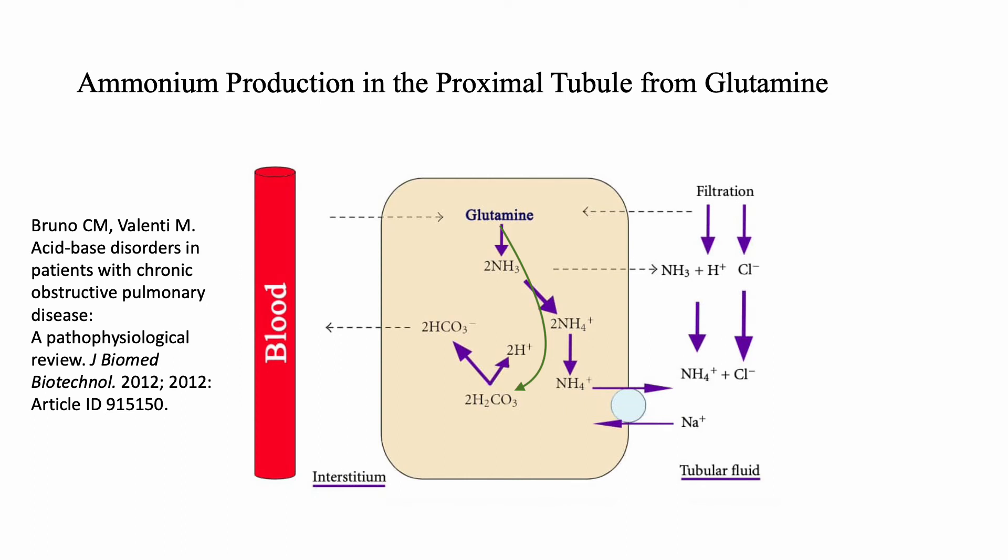Now let's talk about ammonium production in the proximal tubule, looking at this figure. Glutamine is going to give us two ammonium (2 NH4+) and two bicarbonate. The bicarbonate exits the cell, while the ammonium uses the hydrogen-sodium antiporter to exit the cell into the lumen. This is the first step in ammonium exit — it is formed in the proximal tubule and exits via the hydrogen-sodium antiporter.